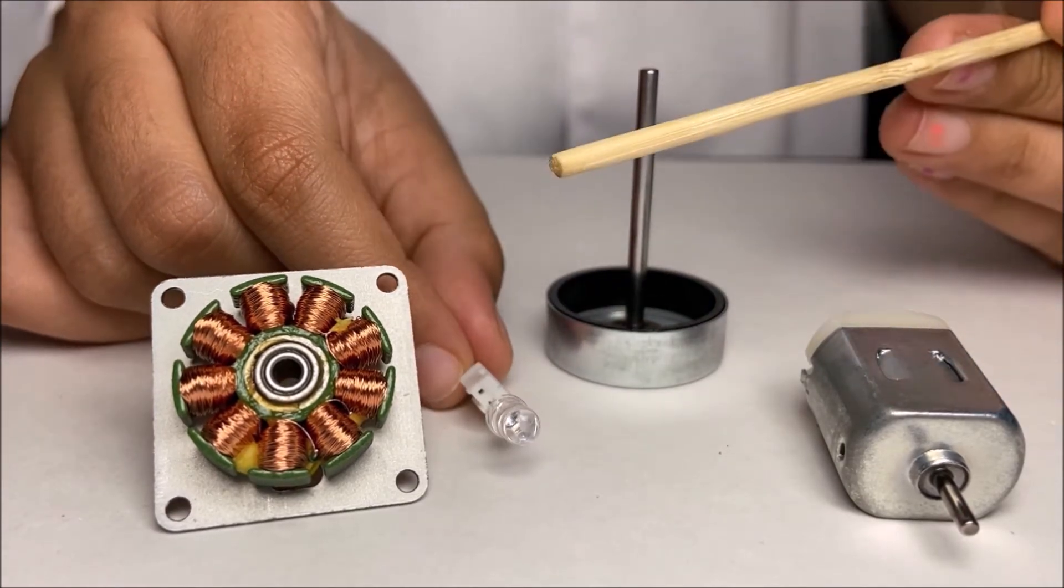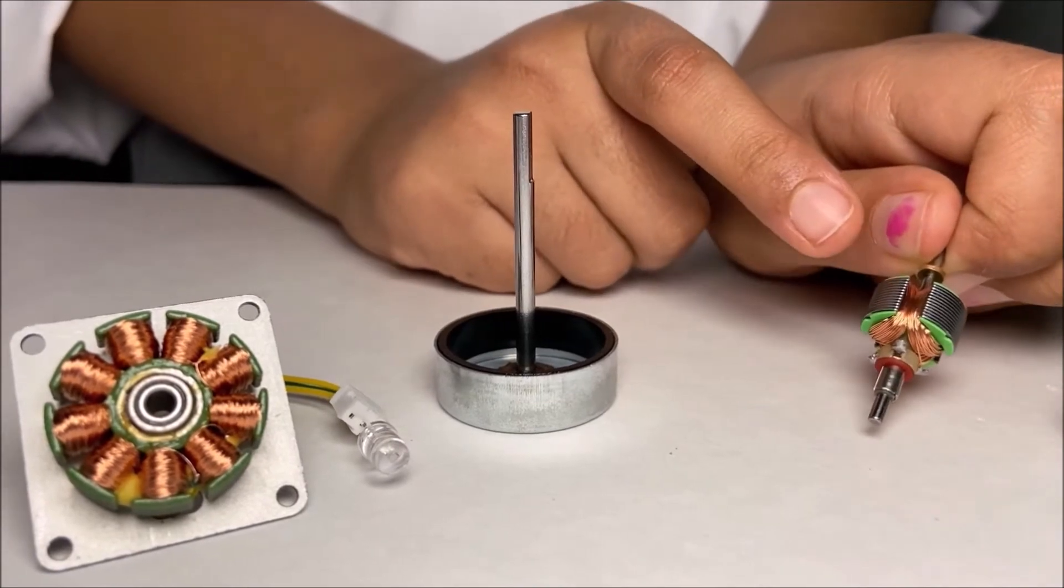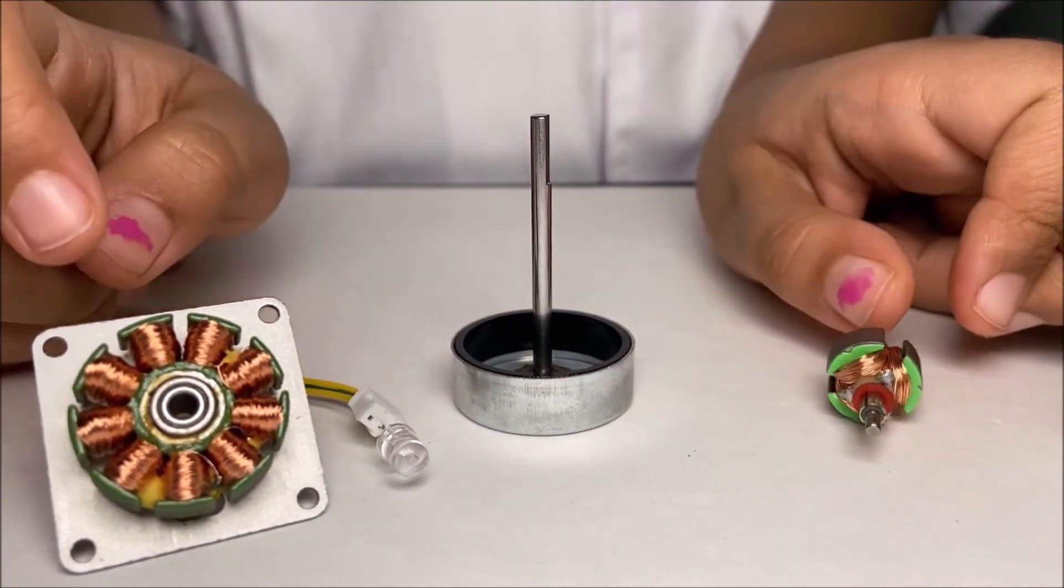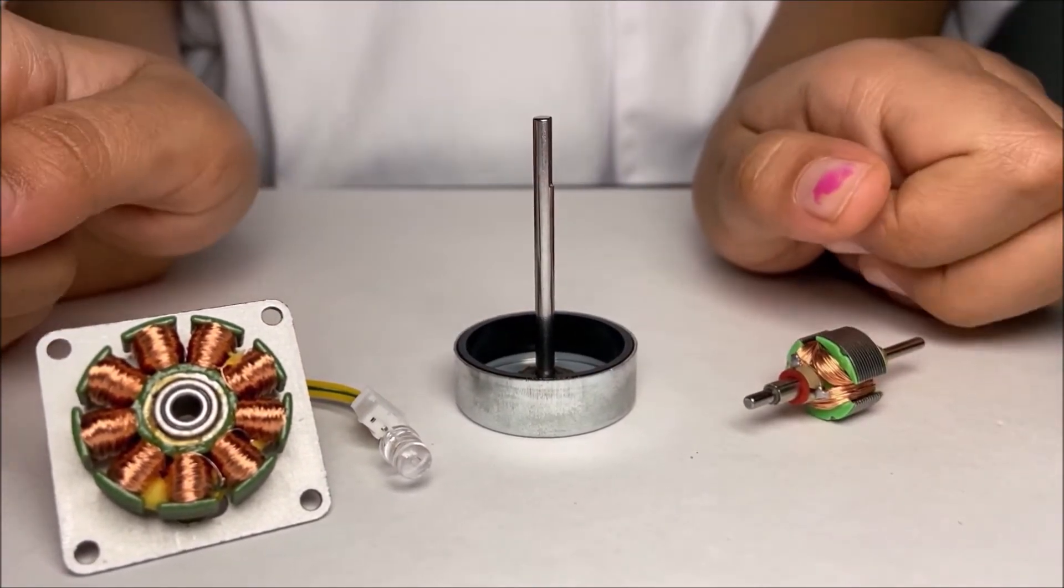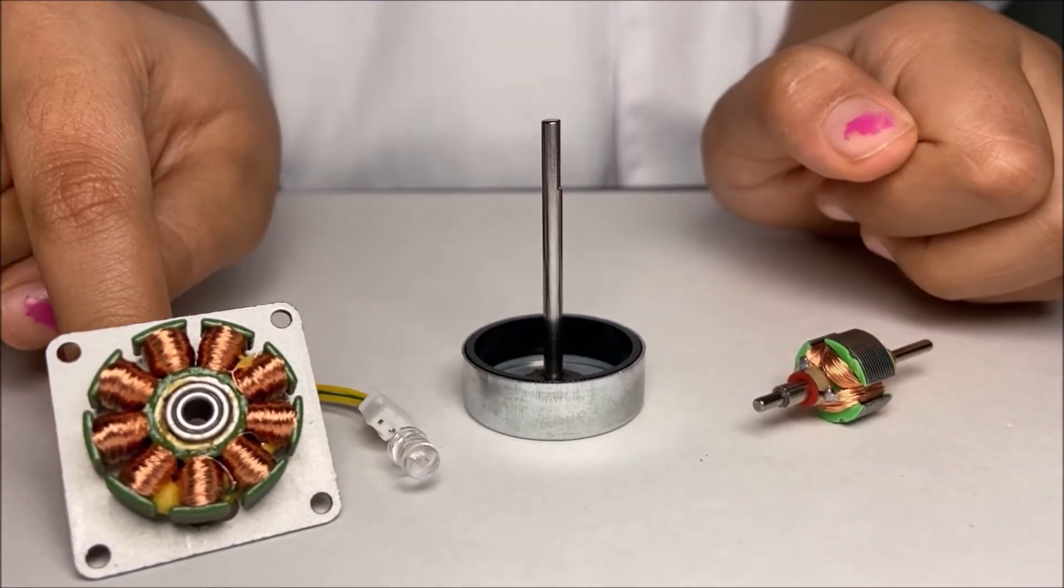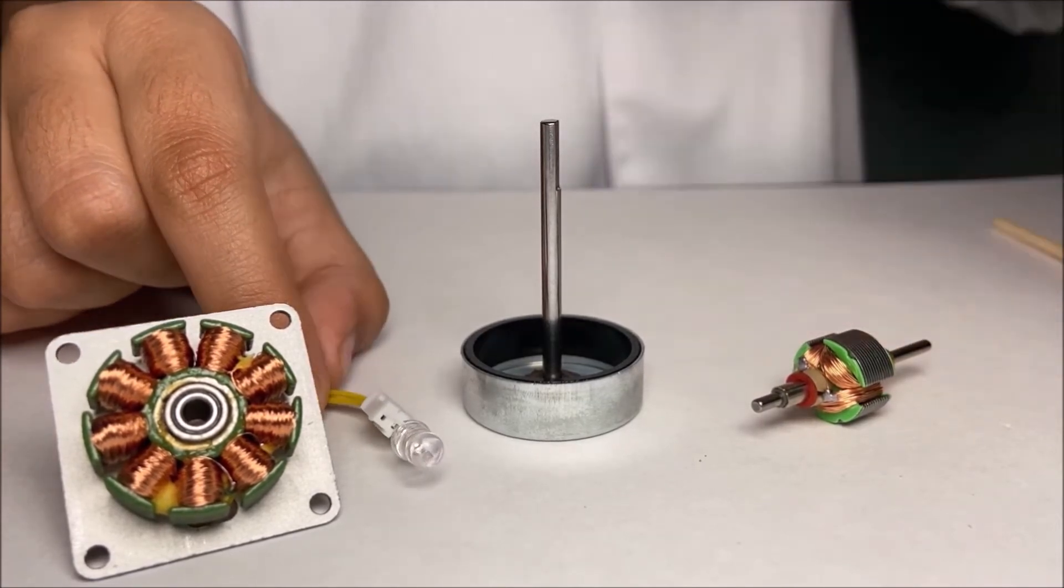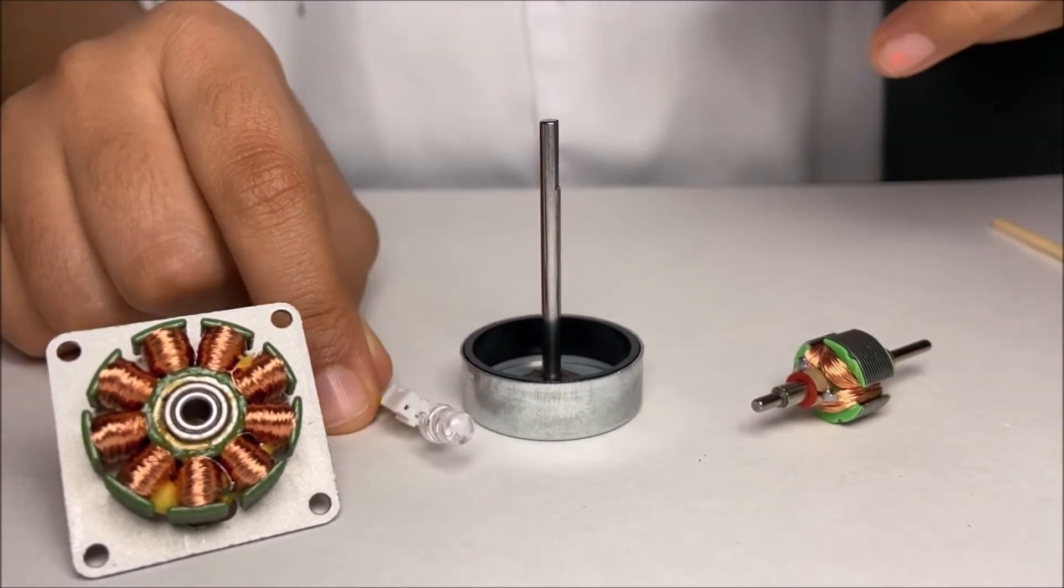In the motor there's only three coils, and in the generator there's nine coils. If there's more coils that means it produces lots of current and electricity.